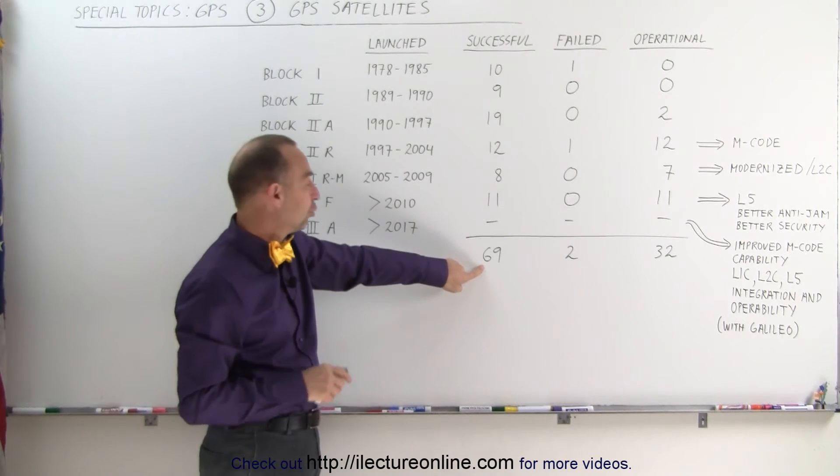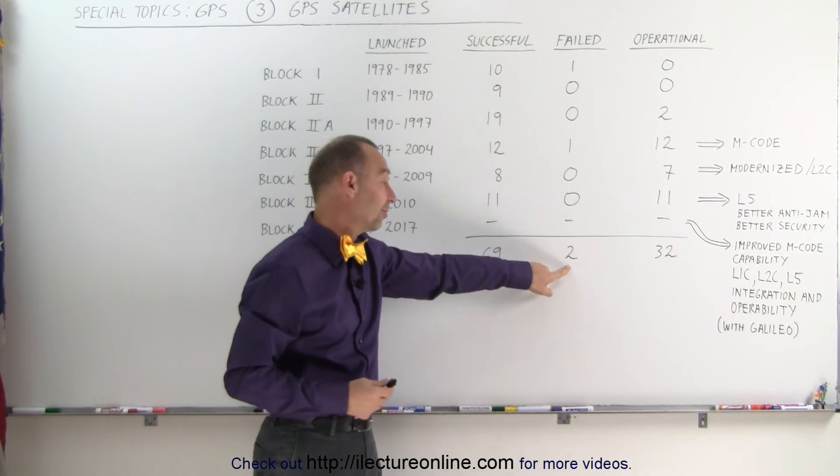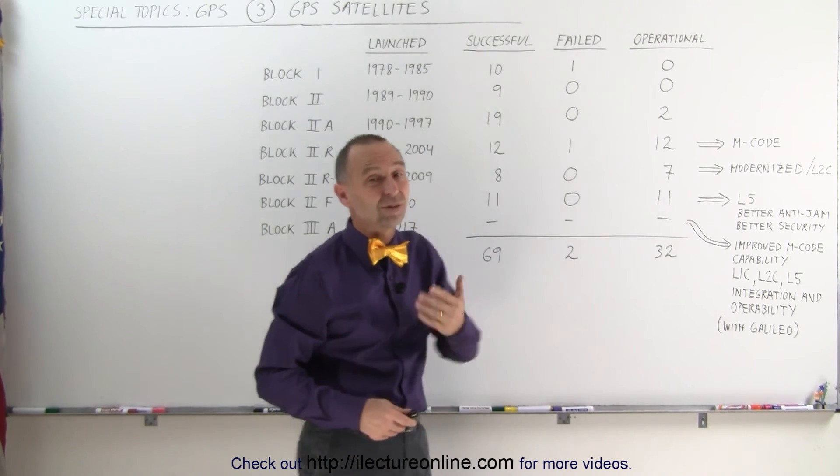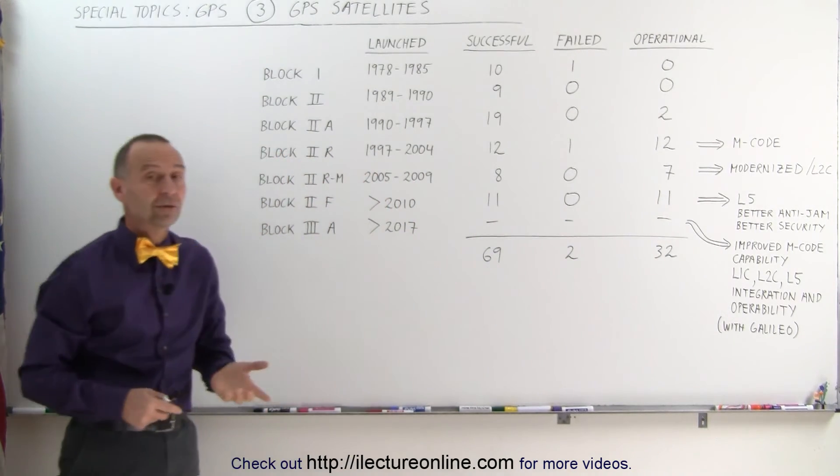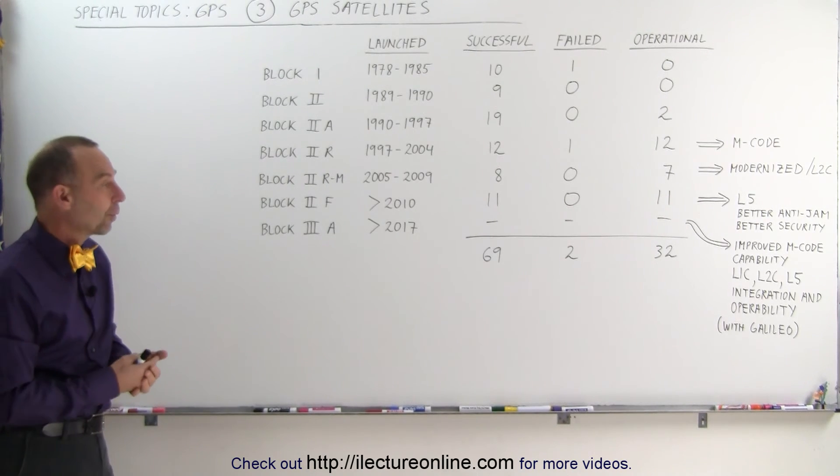Notice there were 69 total successful launches with only two failures. That is also quite a feat I must say, and of all those satellites that were launched, 32 are still operational, which is eight more than is necessary to keep the GPS system going, and launches are still occurring on a regular basis.